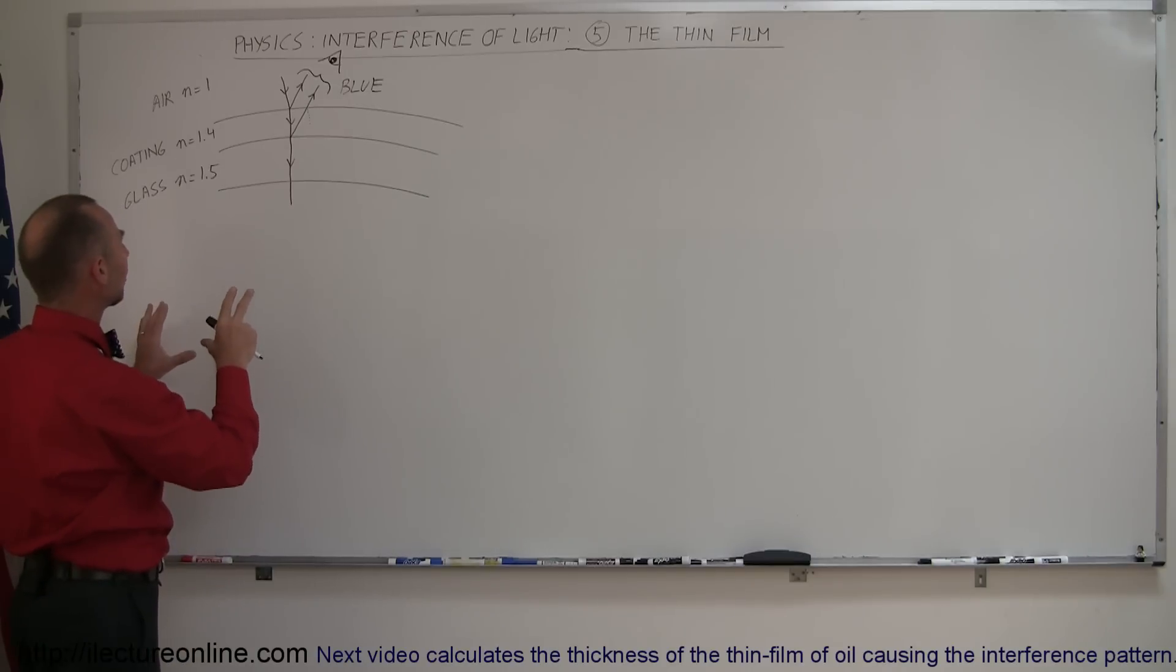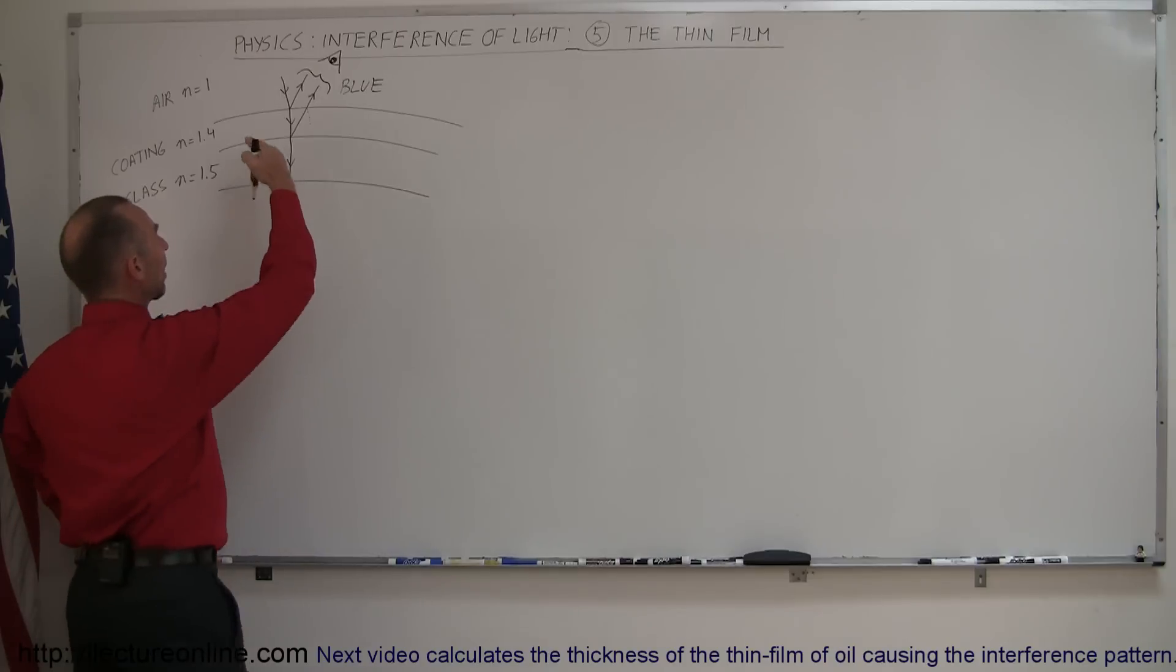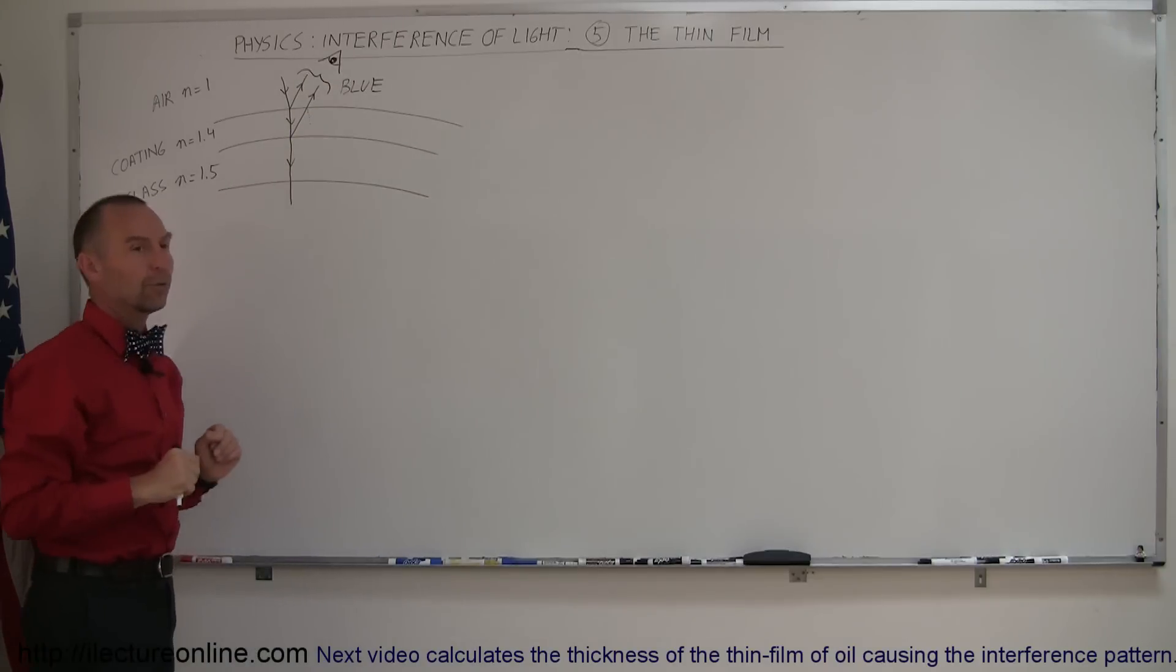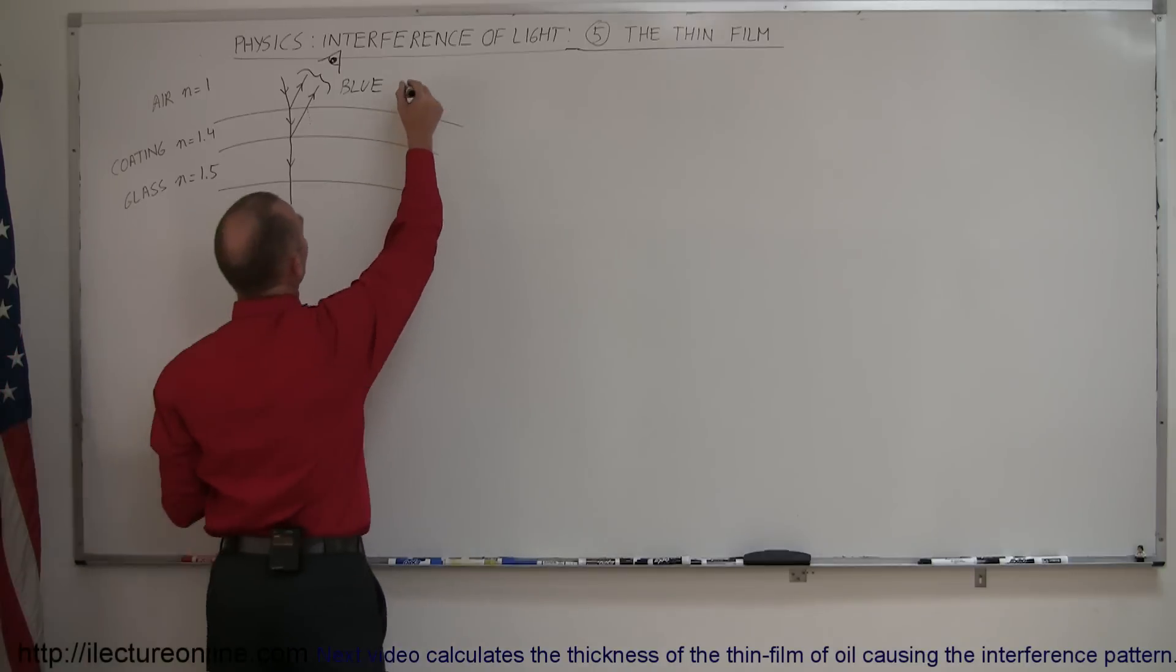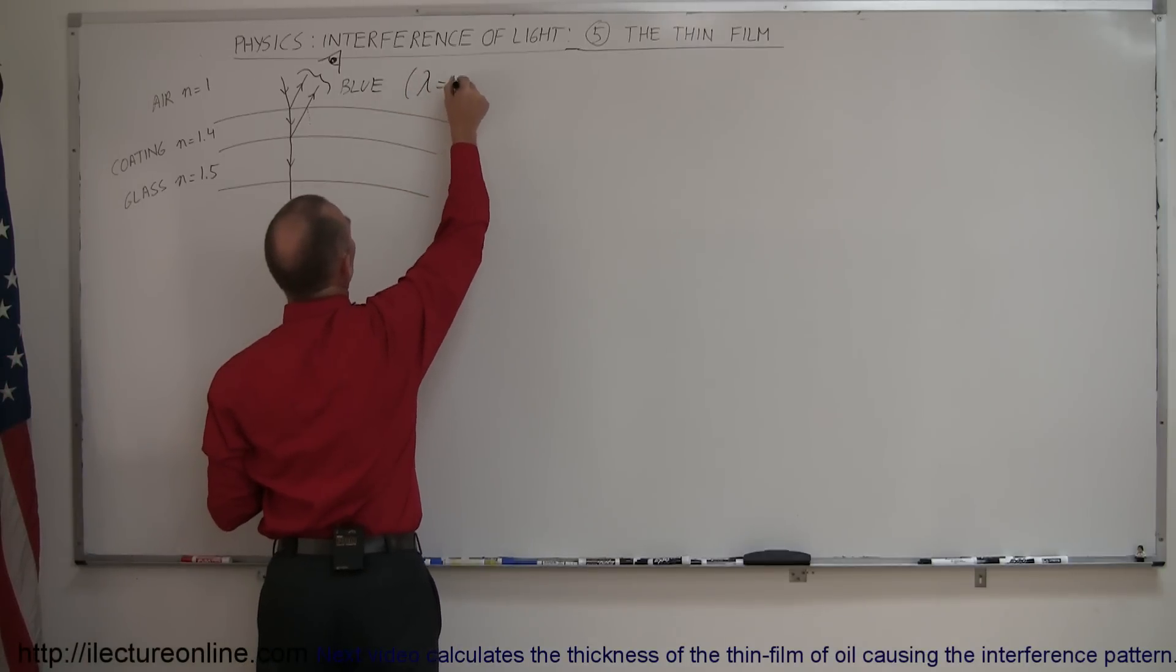So here I'm going to use as an example to show you how a thin film works like that. So in this case, we have blue light being reflected and the rest of the light coming through. And let's say that the wavelength of blue light, let's say the lambda is equal to 400 nanometers.